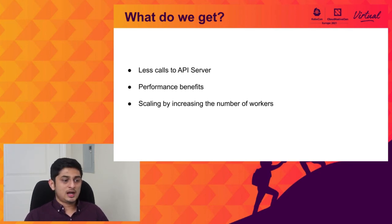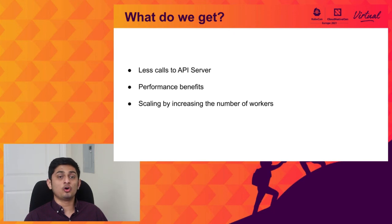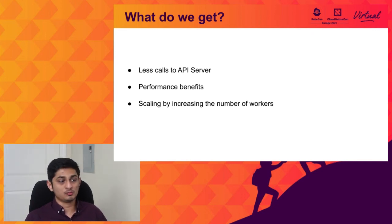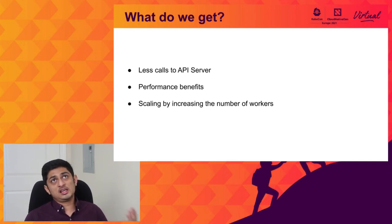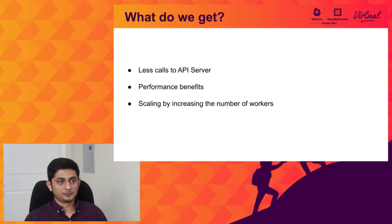So what do we get after all of this? After the entire re-architecture and overcoming all the challenges, we should get fewer calls to the API server. This makes the cron job controller more performant because less time is spent waiting for network calls, and also puts less stress on the API server so the overall system is more performant. It is also very easy to scale up the number of workers — a user with a lot of cron jobs who finds the default of one worker insufficient can safely increase the number of workers to achieve better scaling.